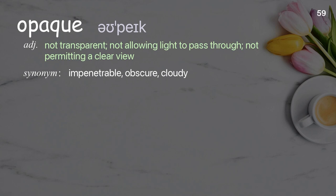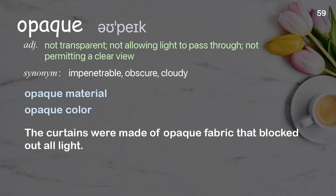Opaque: not transparent; not allowing light to pass through; not permitting a clear view. Examples: Opaque material. Opaque color. The curtains were made of opaque fabric that blocked out all light.